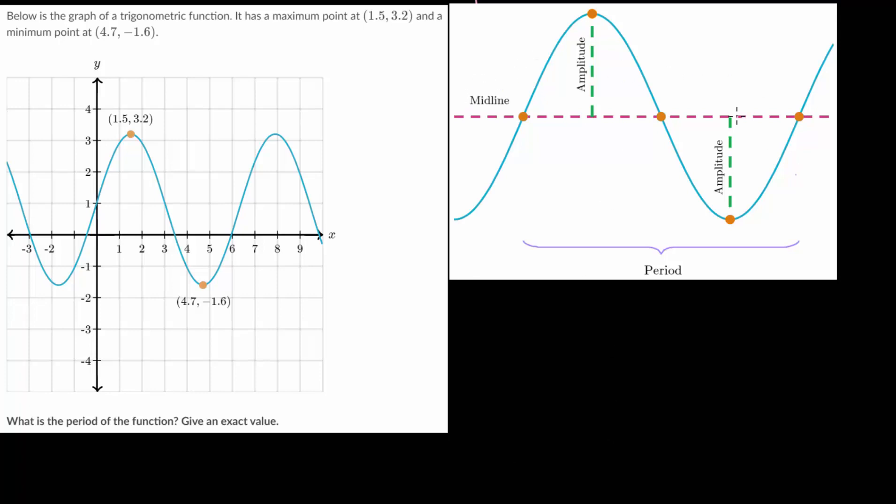We can see in this picture the three key features of sinusoidal functions. The midline is the horizontal line that goes right through the middle of the function. The amplitude is just the distance from the midline to the maximum or from the midline to the minimum value.